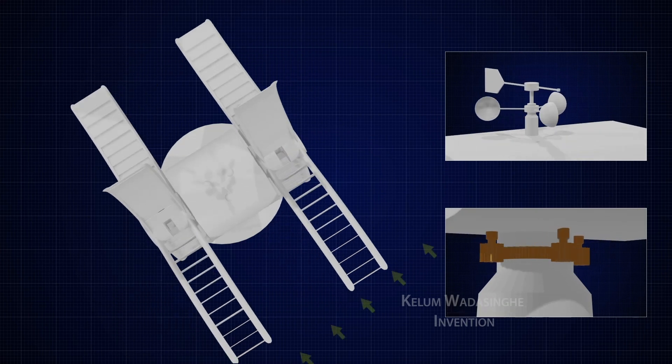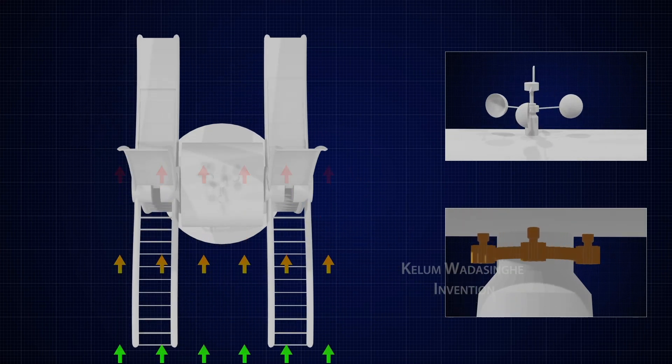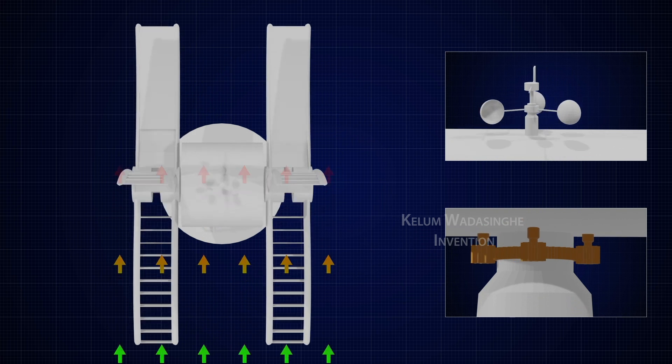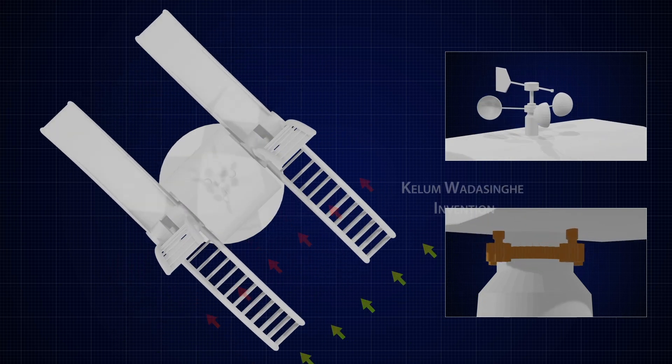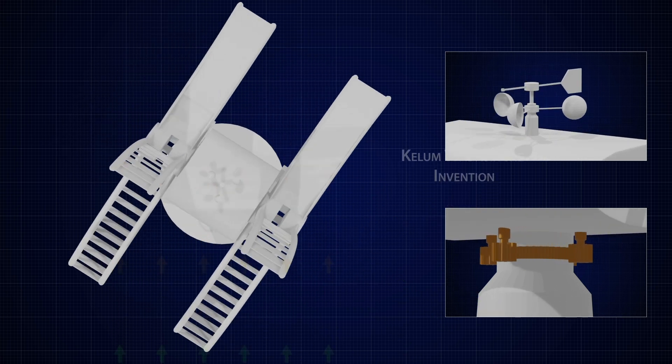The wind direction indicator will provide the signal for the rotation of the wind turbine to face the wind to absorb the maximum power.